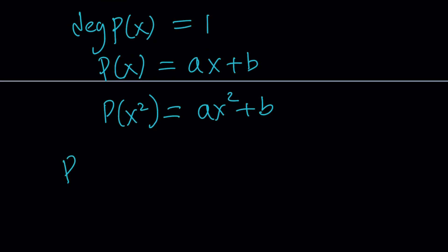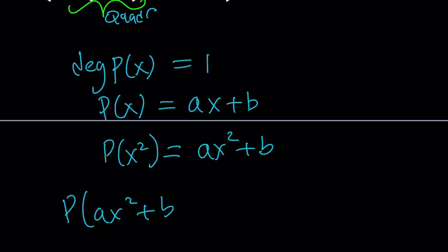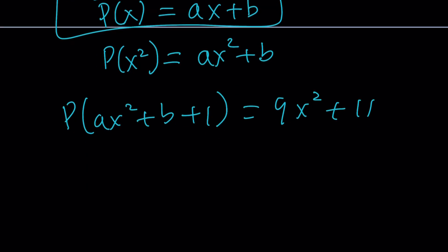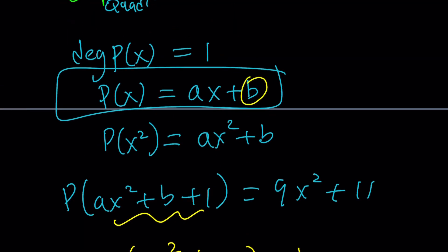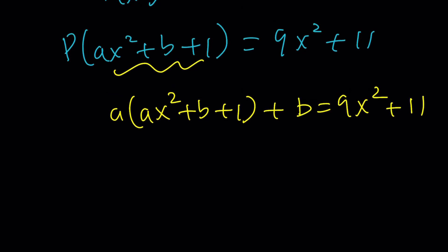Notice that the degree of P of x squared is quadratic. And then when you P that again, P of P of x squared plus 1, don't forget the 1 like I did, is going to be this. P of x is ax plus b, so it will take the argument, multiply by a, and then add b, and it's going to equal 9x squared plus 11. Here's the rule for the polynomial P. It's going to take the input, multiply by a, and then add b to it. This is your new x.